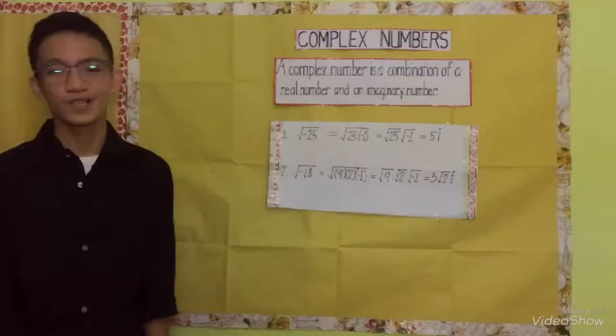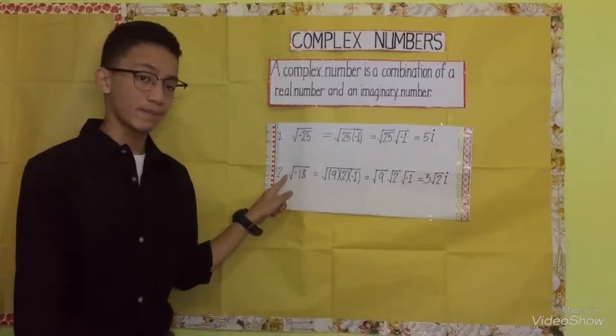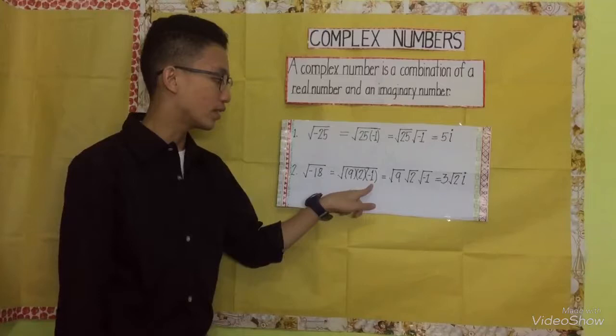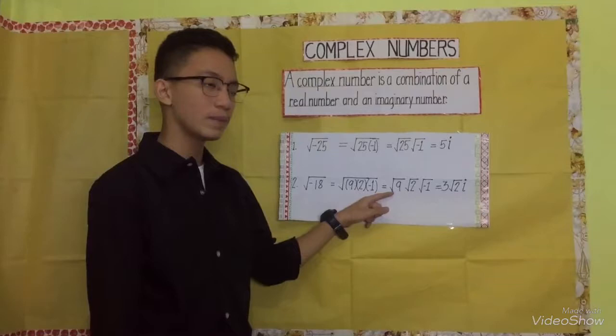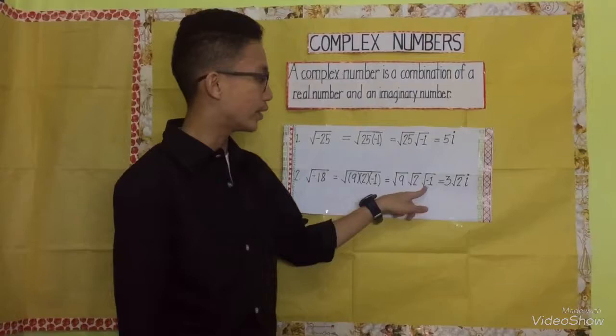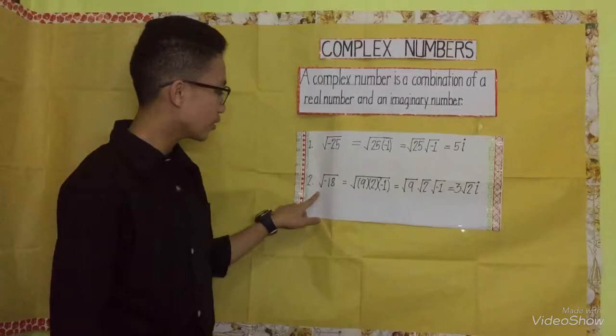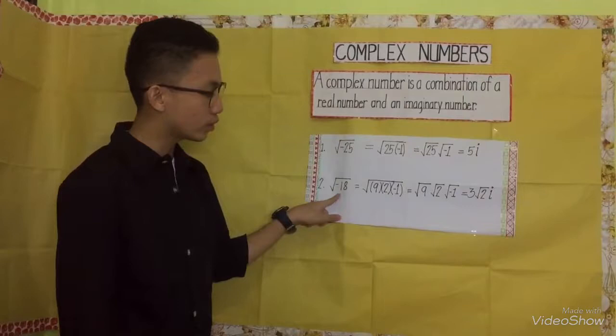Let's have another example. Number 2, simplify. The square root of negative 80 is equal to the square root of the factors of negative 80, which are 9 times 2 times negative 1. Applying once again the property of radicals in multiplication: the square root of 9, times the square root of 2, times the square root of negative 1. The square root of 9 is equal to 3, the square root of 2 is equal to √2, and the square root of negative 1 is equal to i. Therefore, the answer to the square root of negative 80 is 3√2 · i.